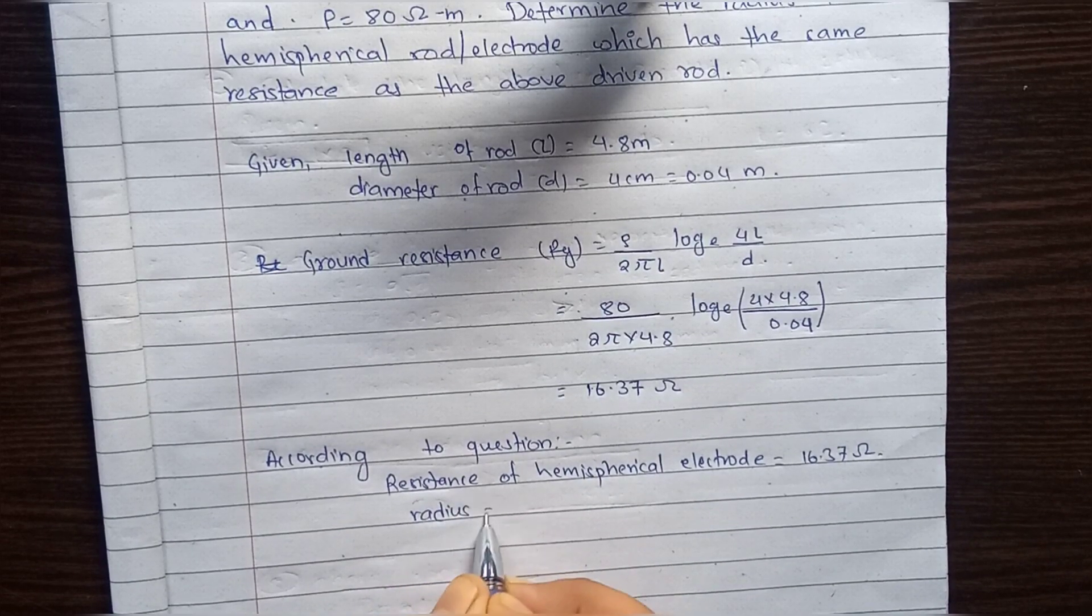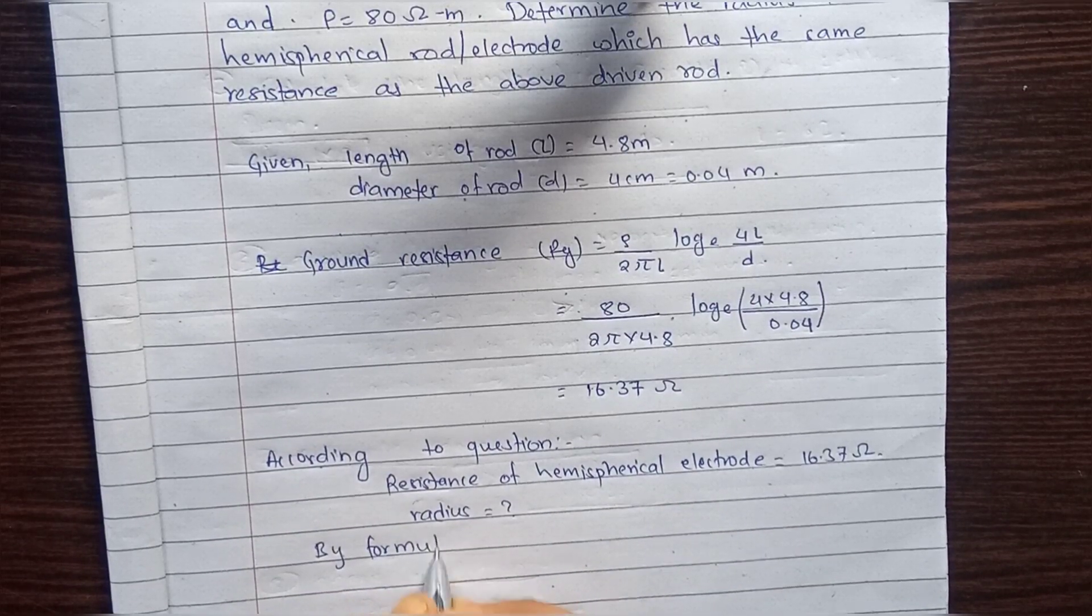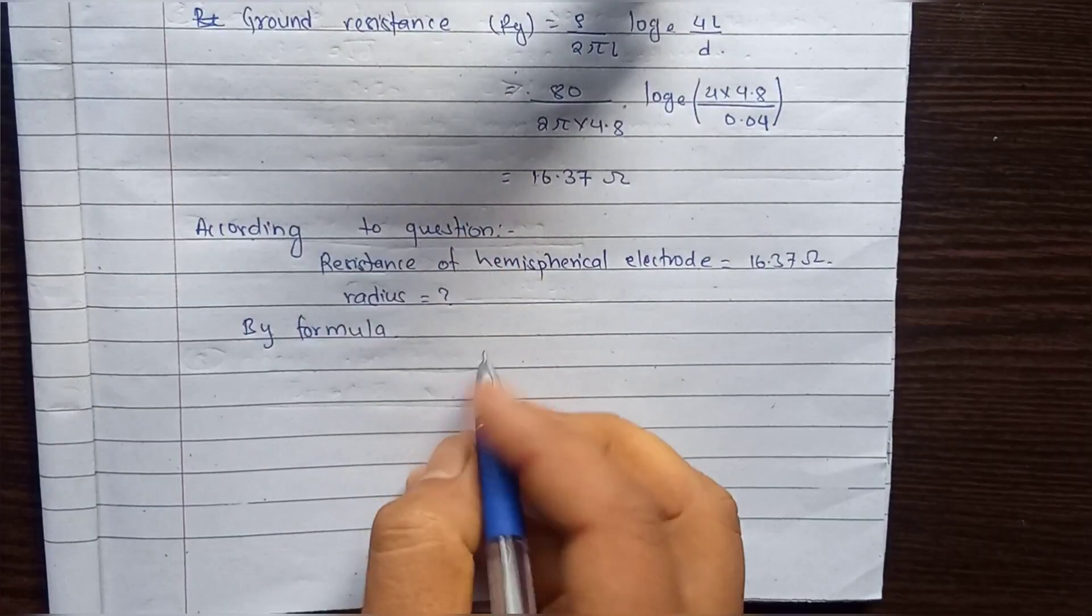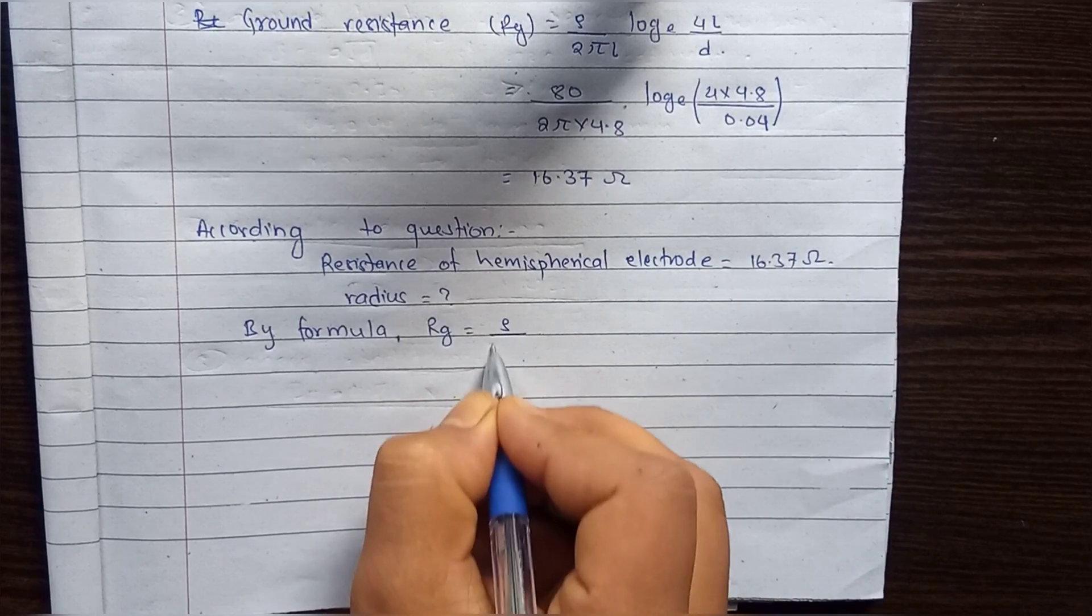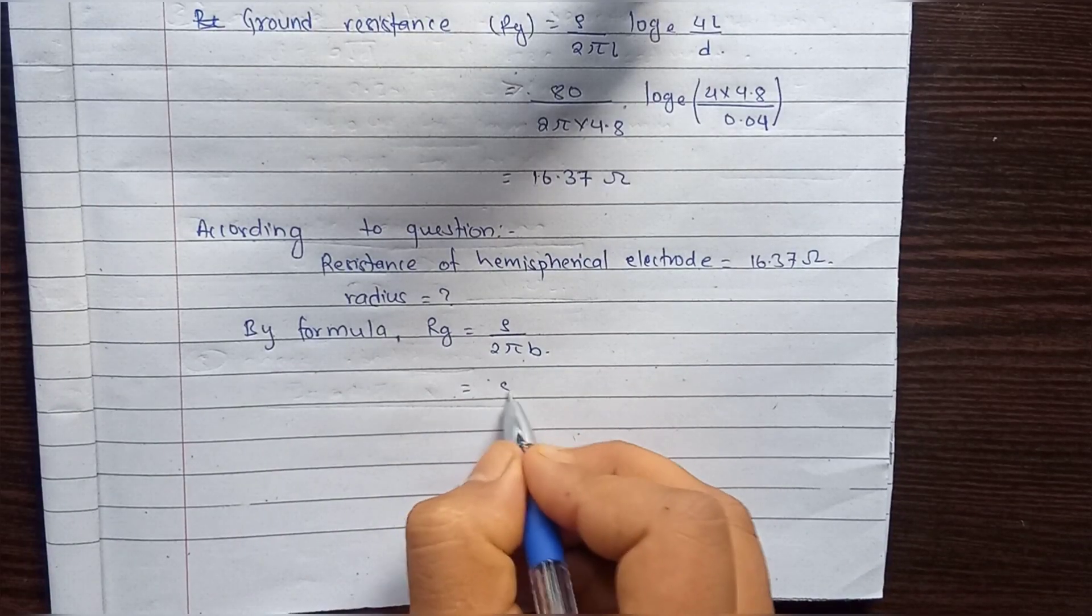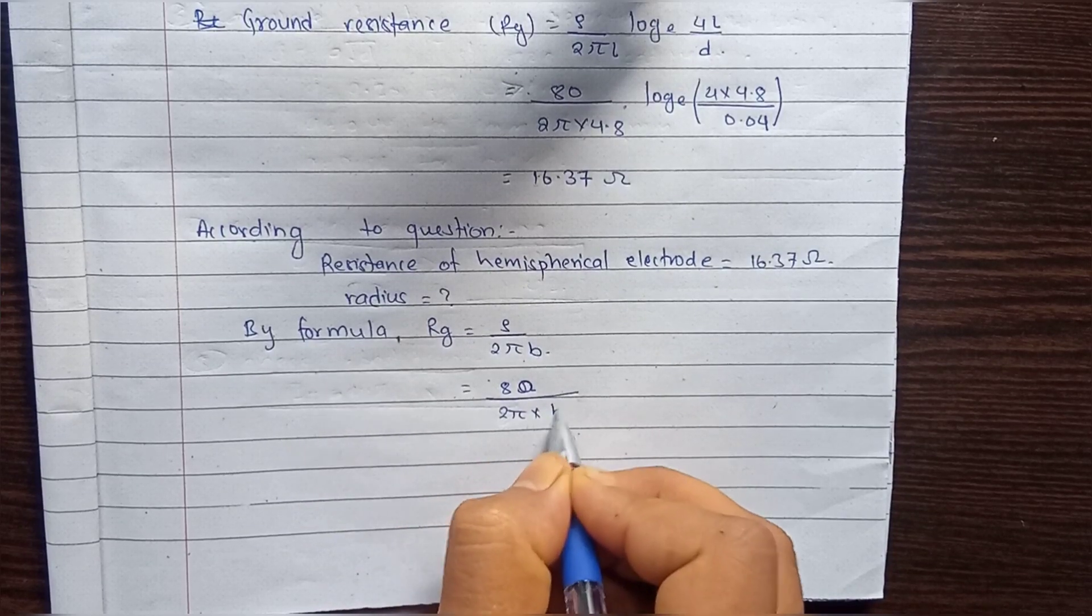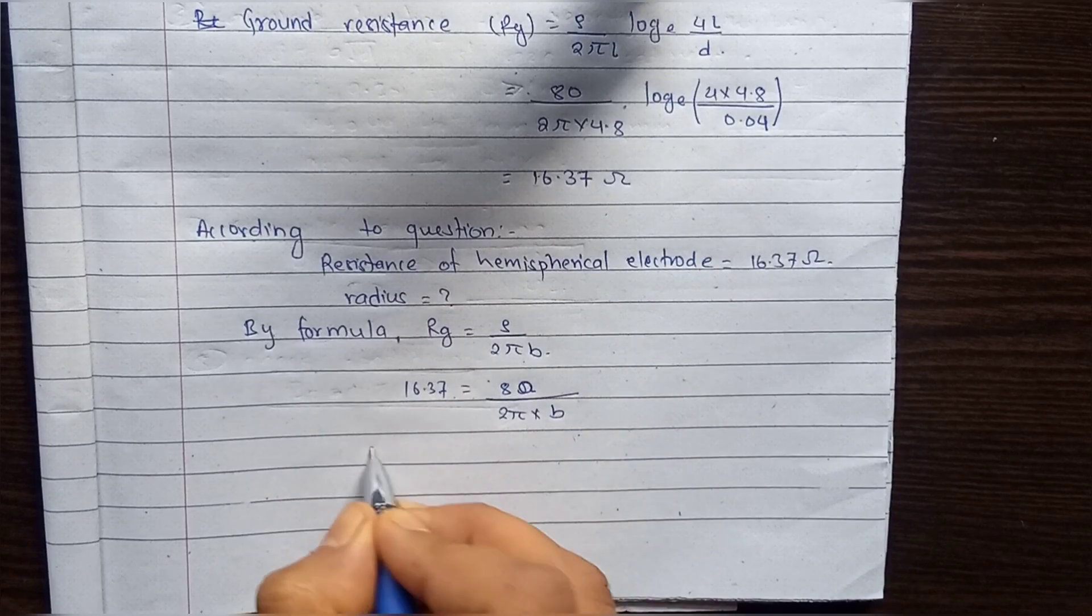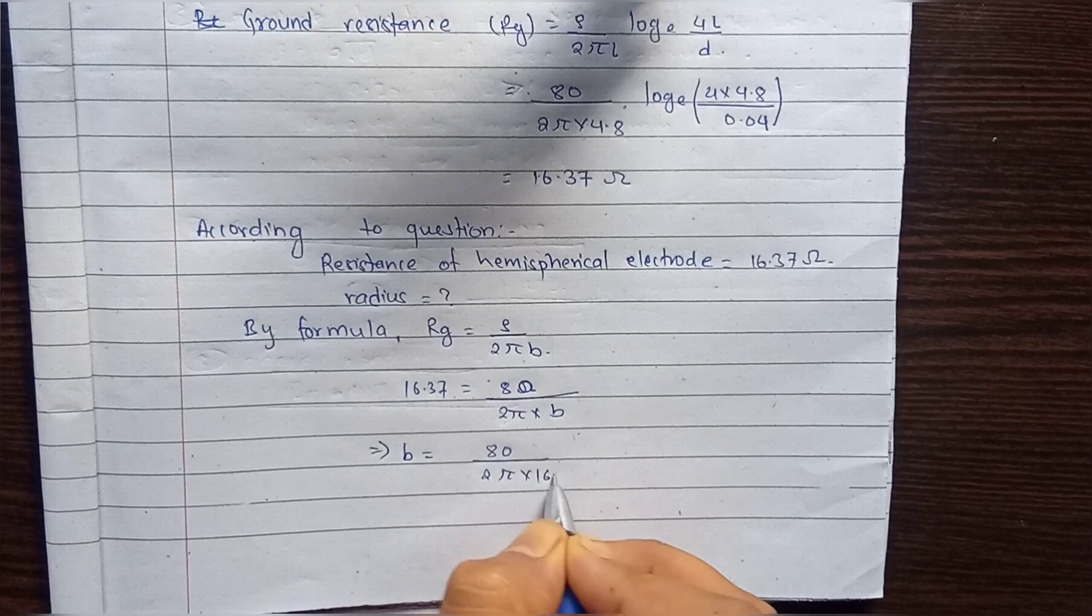Now to find the radius, by formula Rg = ρ/(2πB). Given ρ is 80 ohm meter, Rg is 16.37. Calculate B = 80 / (2π × 16.37).